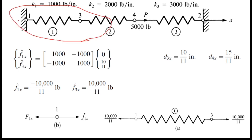Let's go to our problem. First I will consider spring 1. The node numbers are 1 and 3, so the local forces are labeled f1x-cap and f3x-cap. The spring constant of spring 1 is 1000 — it is given in our problem. The displacements correspond to node 1 and node 3, so this is d1 and this is d3.